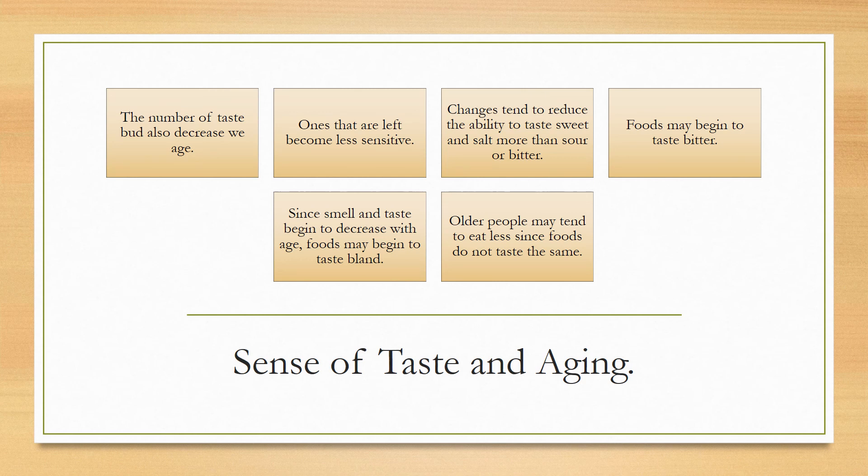Regarding taste and aging: the number of taste buds decreases as we age, and those that remain become less sensitive. It may become difficult to taste salty or sweet things, and these changes tend to reduce the ability to taste sweet and salty more than sour or bitter. Foods may also begin to taste bitter, which is why older people sometimes say food tastes strange. Since smell and taste both decrease with age, foods may also begin to taste bland.